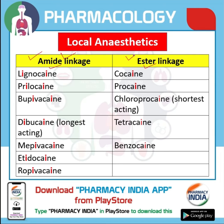Remember this very interesting trick: whichever local anaesthetic has the letter 'i' appearing twice in its spelling, that is amide linkage. For example, lignocaine — double 'i' — amide linkage. Similarly, prilocaine, bupivacaine (which is the longest acting), dibucaine, mepivacaine, etidocaine, ropivacaine — all are amide linkage.